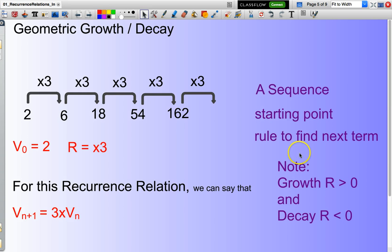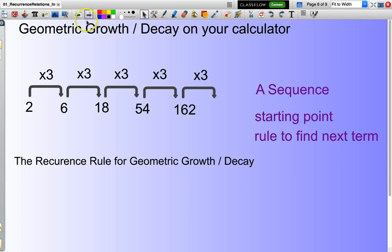And should note, I'll probably mention this a few times over the next few slides. For growth, the value of R has to be greater than 1. And for decay, the value of R is less than 1. Now likewise, I could do this in my calculator. So let's start with 2 and we will continually multiply that by 3.